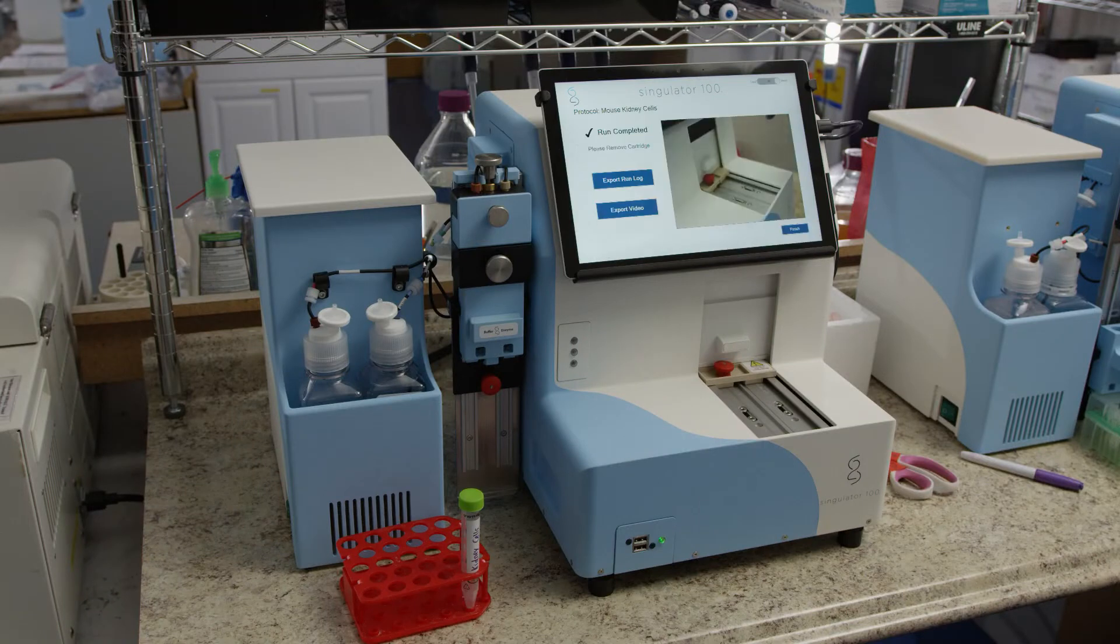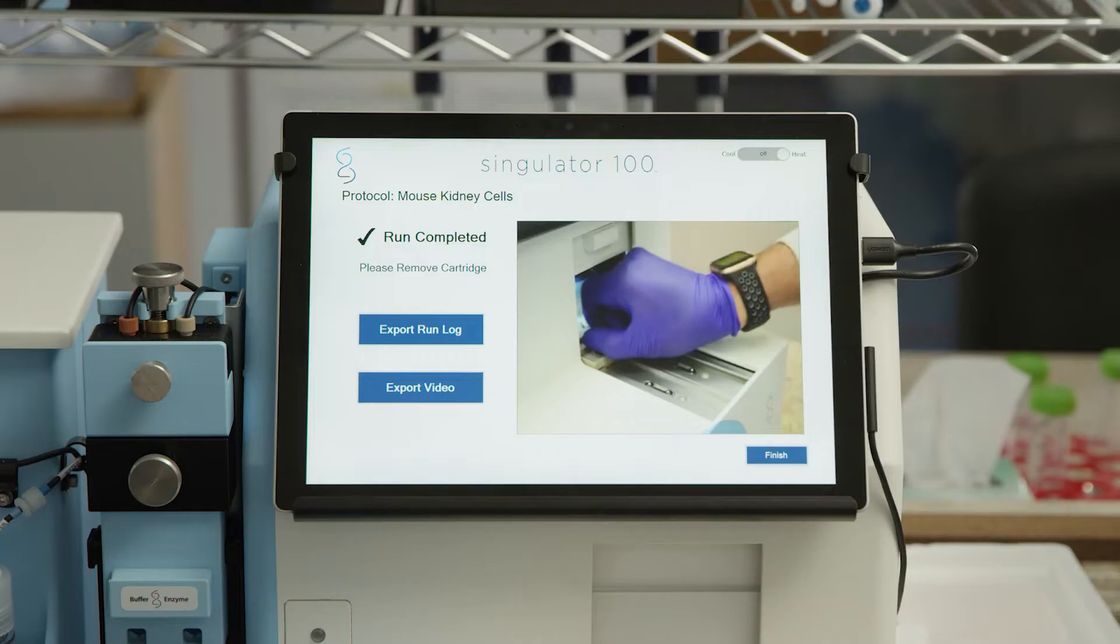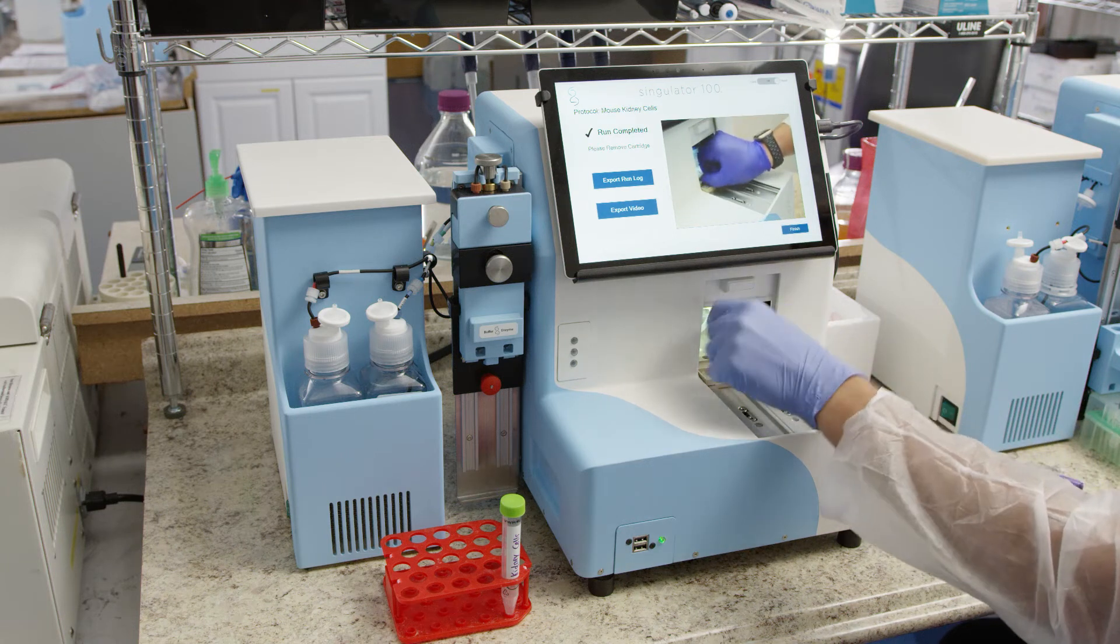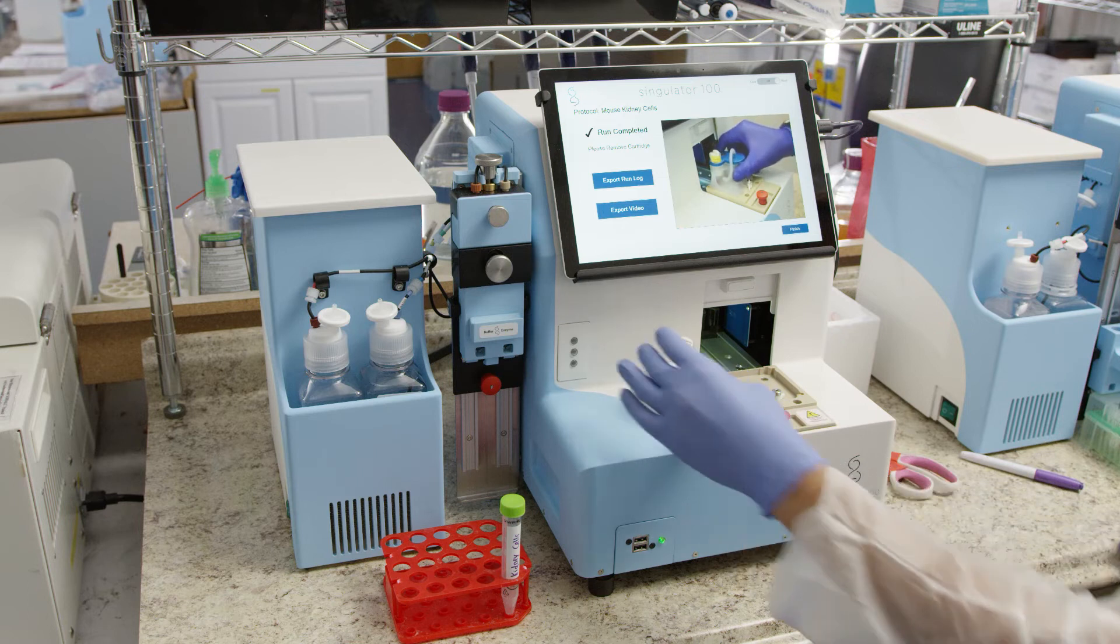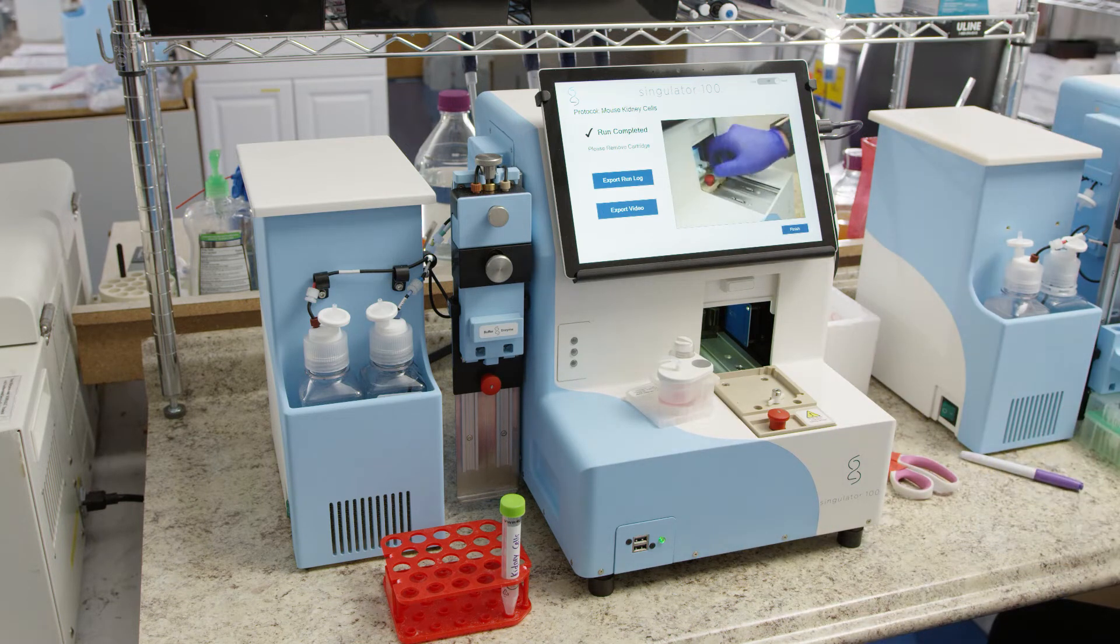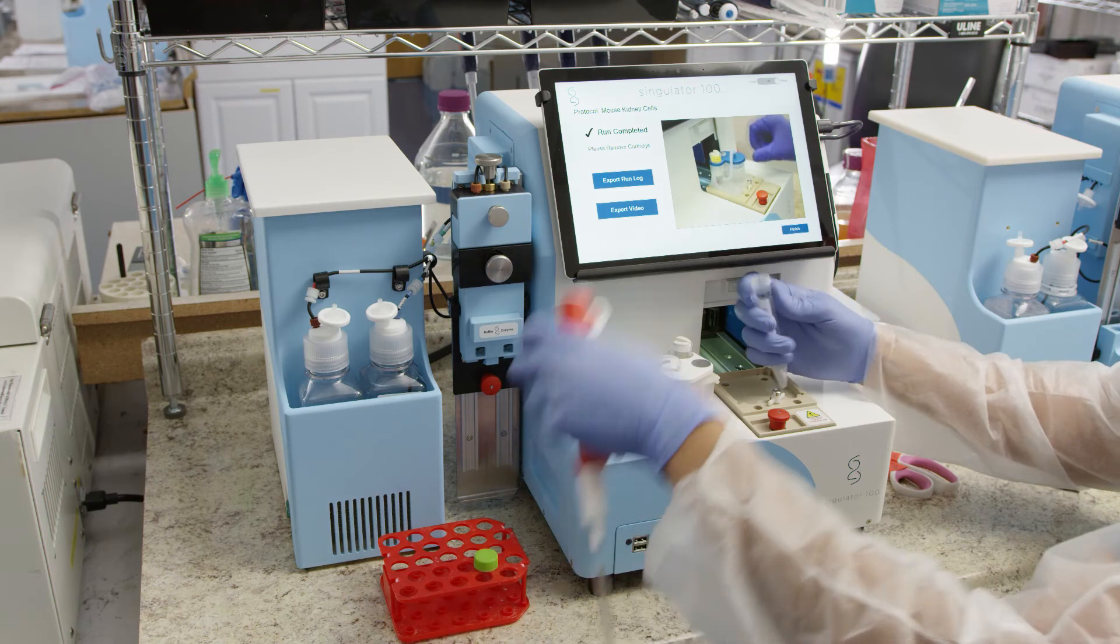The Singulator software will provide a notification when a run is complete. Open the door, lift the red knob to release the stage, and slide the stage out of the instrument. Turn the rear cartridge lock to release the cartridge and lift the cartridge off the stage. Place the cartridge on a flat surface.